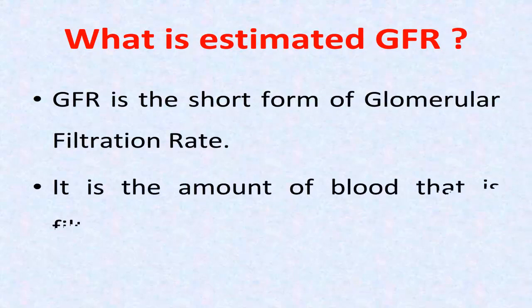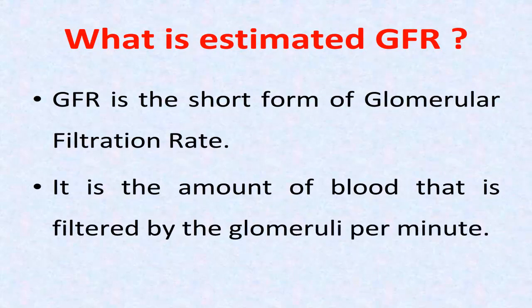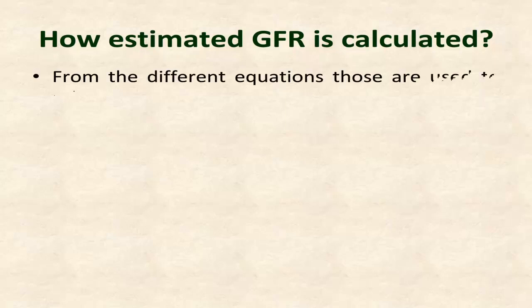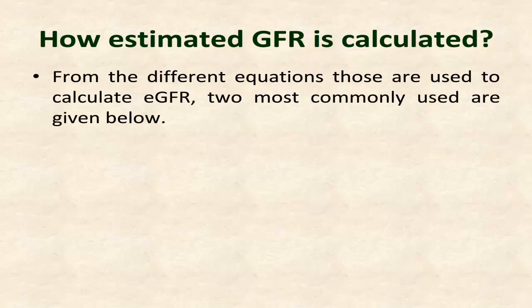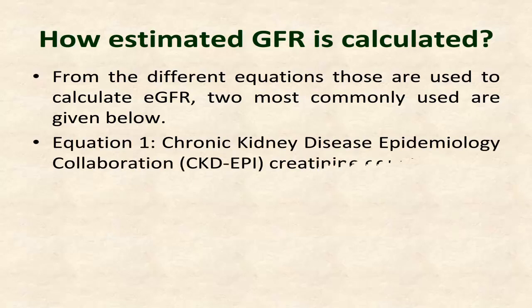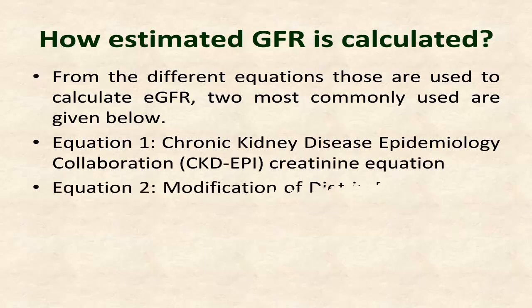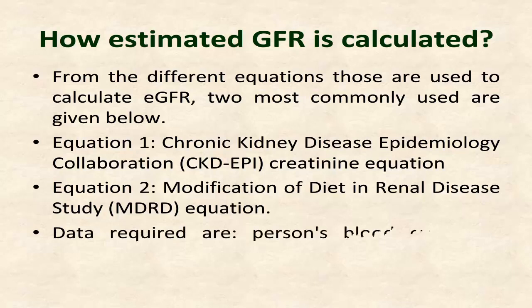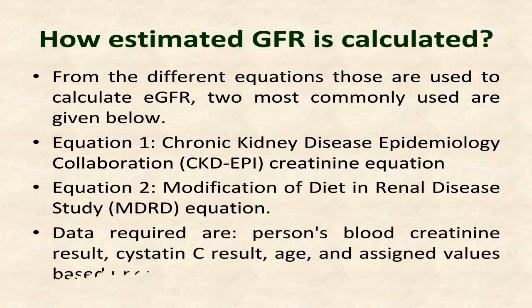eGFR is the amount of blood that is filtered by the glomeruli per minute. How eGFR is calculated: from the different equations used to calculate eGFR, two most commonly used are: Equation 1 — the Chronic Kidney Disease Epidemiology Collaboration (CKD-EPI) creatinine equation; and Equation 2 — the Modification of Diet in Renal Disease (MDRD) study equation.